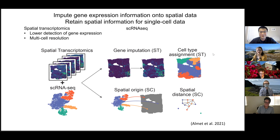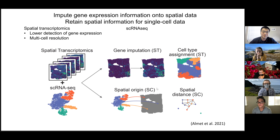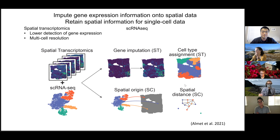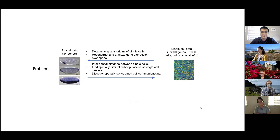If we use single-cell data to help spatial transcriptomics data, we can impute gene expression and better annotate cell types in spatial data. In the other direction, once we have paired spatial data for a single-cell dataset, we can estimate the spatial origins of the cells. We can also create an implicit metric space for single cells by approximating the spatial distances between them, without creating an explicit quantization of cells.